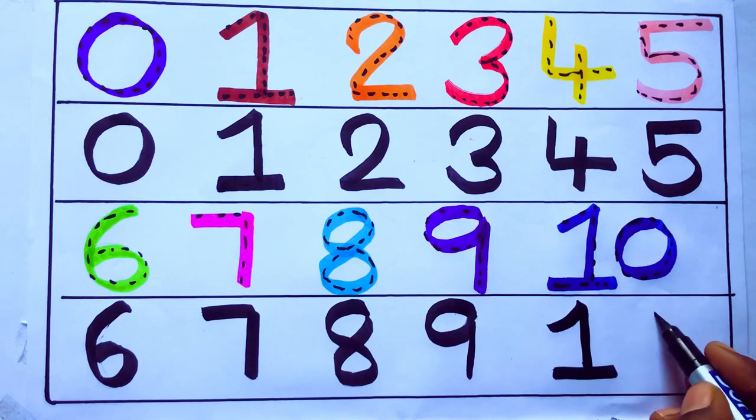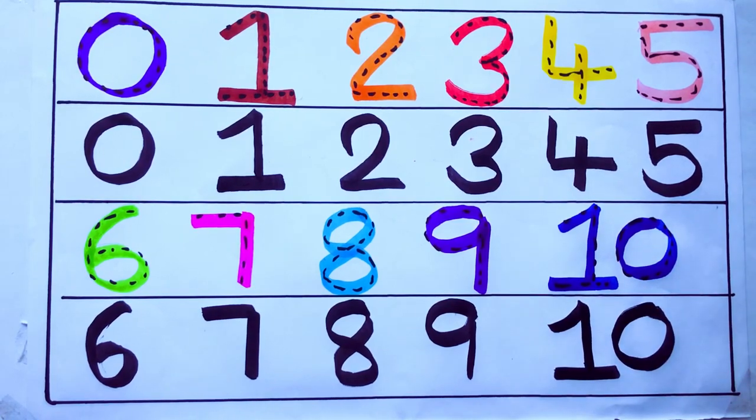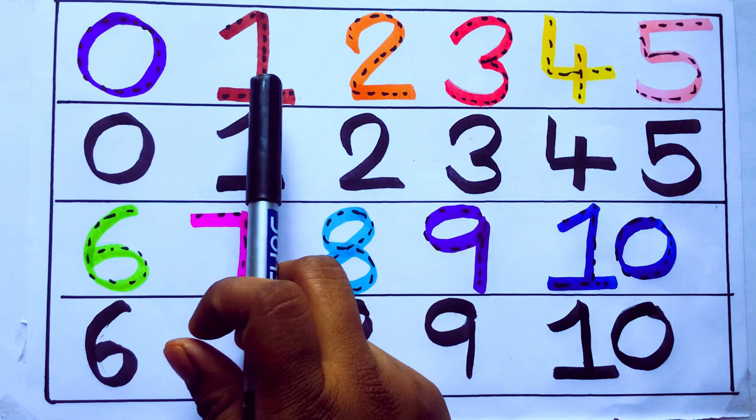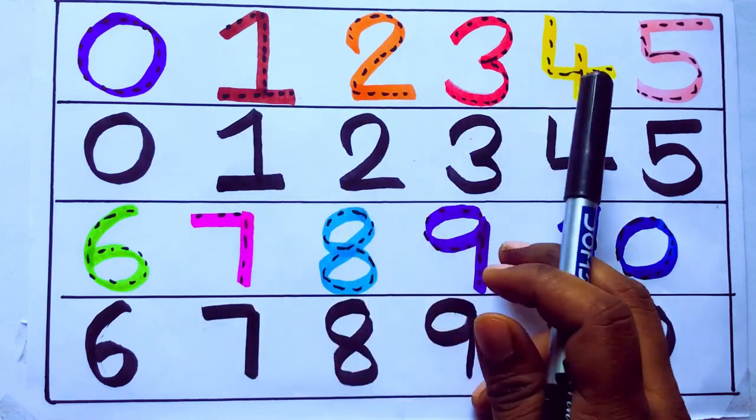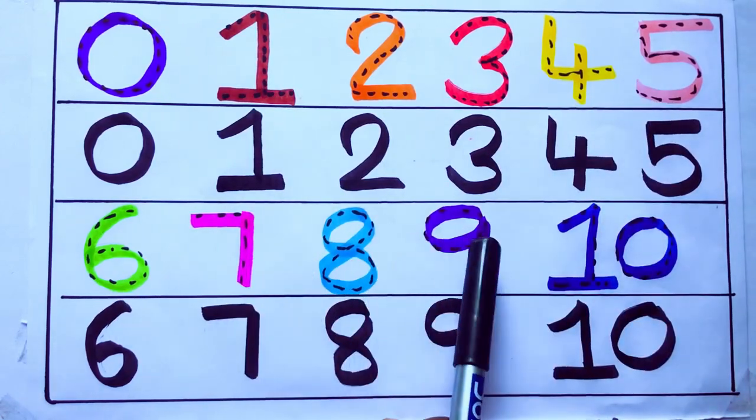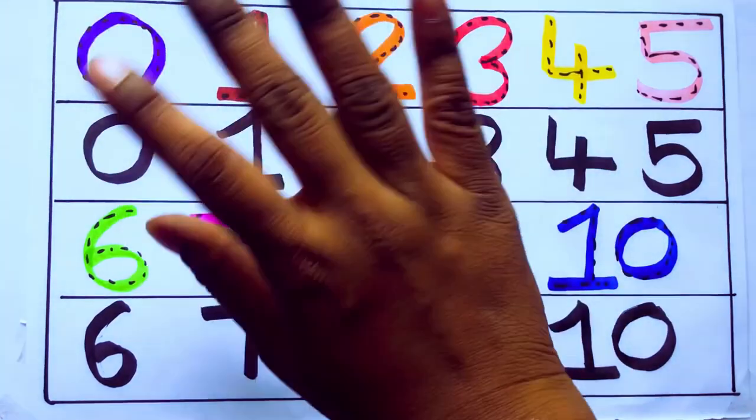Number 10. Let's review the numbers: 0, 1, 2, 3, 4, 5, 6, 7, 8, 9, 10. Okay, bye kids.